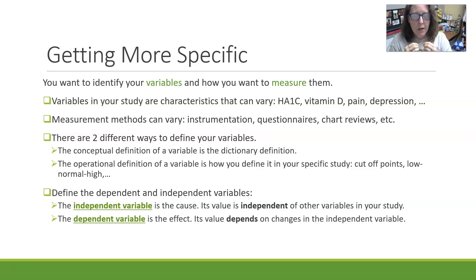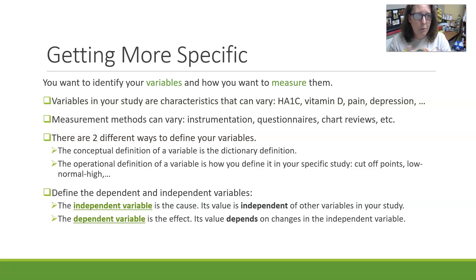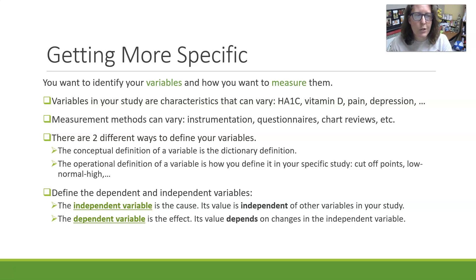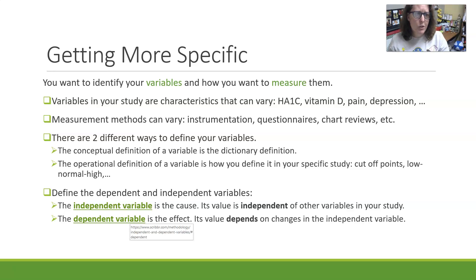You want to be able to identify your variables and how you want to measure them. Variables are the characteristics that can vary from one person to the next or from one group to the next. In type 2 diabetes, one variable that's easy to measure and reflects change over time in compliance with treatment is A1C — hemoglobin A1C. Vitamin D levels can be another one. Pain levels can be measured on pain scales, depression using a depression questionnaire. Measurement methods can vary: instrumentation for A1C or vitamin D levels, questionnaires for depression or food frequency, or a Likert scale for pain.